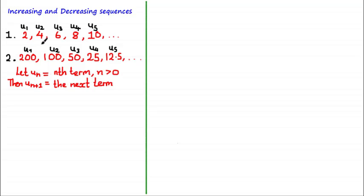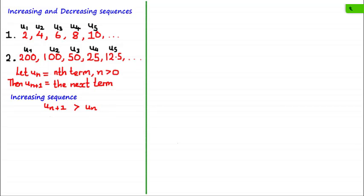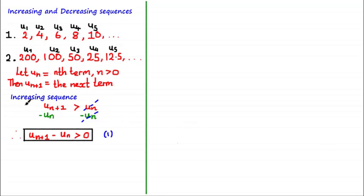Earlier we were able to numerically see that this was an increasing sequence because the next term was greater than the previous term, and you can do the same thing algebraically. A sequence is increasing if u sub n plus 1 is greater than u sub n for all values of n, where n is a positive integer. Rearranging this inequality by subtracting u sub n from both sides, a sequence is increasing if u sub n plus 1 minus u sub n is greater than 0 — that is, the difference between the next term and the previous term is positive.